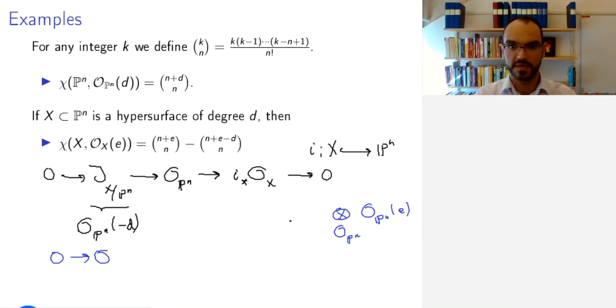So then I get O_{P^n}(e). And tensoring behaves additively with respect to these twisting sheaves. So I simply get e plus minus d. Here I get O_{P^n}(e). And here I get O_X(e).